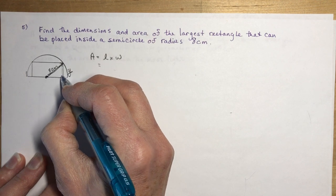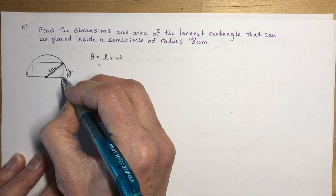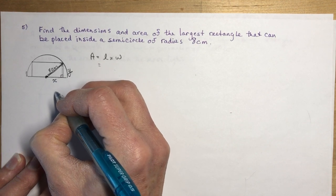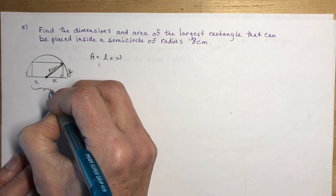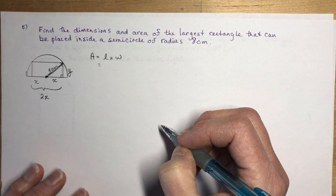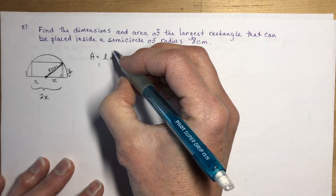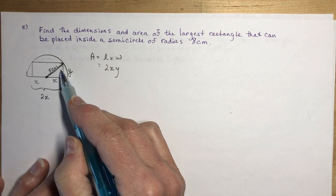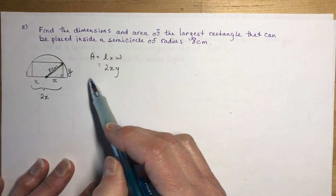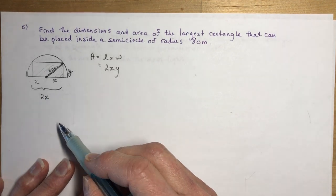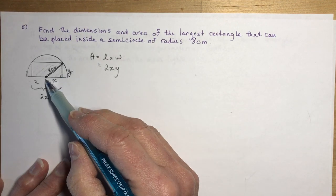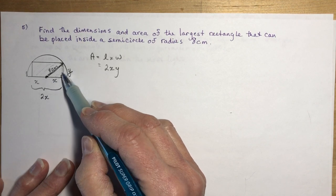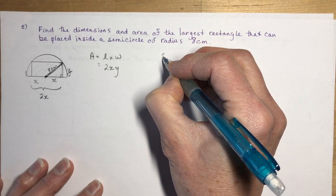Let's assign variables. Give the height of the rectangle the value y. There's a right-angle triangle formed inside the semicircle with the hypotenuse being 8. The height is y. If I call the half-width x, then the full width of the rectangle is 2x. So the area of the rectangle is A = 2x · y.